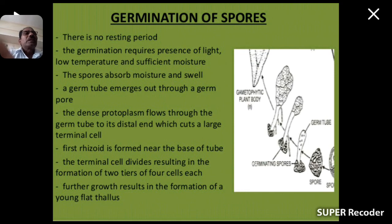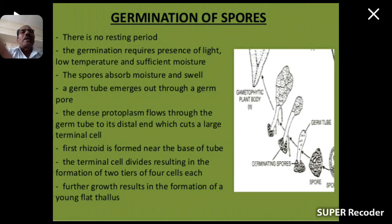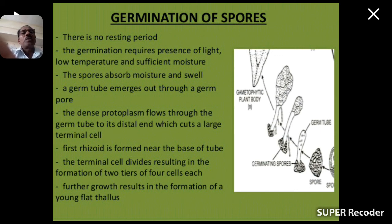Germination of spores. There is no resting period. Germination requires the presence of light, low temperature, and sufficient moisture. The spores absorb moisture and swell. A germ tube emerges out through a germ pore. The dense protoplasm flows through the germ tube to its distal end, which cuts a large terminal cell. The first rhizoid is formed near the base of the tube. The terminal cell divides, resulting in the formation of two tiers of four cells each. Further growth results in the formation of a young flat thallus.